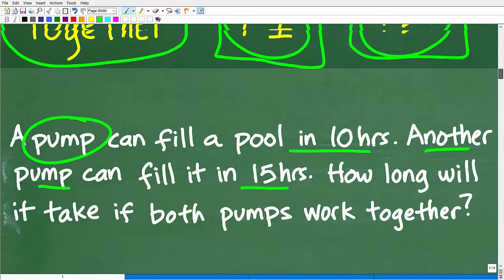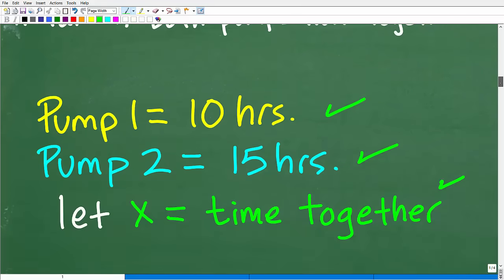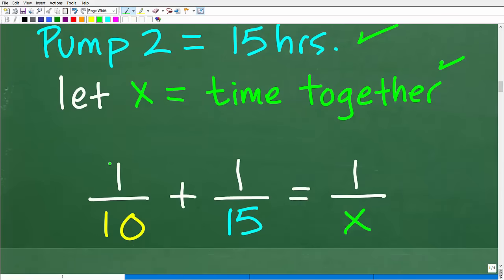In this equation here, this is going to be the time together. So one over, this is the time for that first pump. One over, this is the time for that second pump. One over the X is going to be the time working together. So let's go ahead and put this all together. So we have one over 10. This represents the part of the job that that first pump, the faster pump is going to do, plus one over 15. This is the slower pump. And that's going to equal this pump and this pump working together. It's going to equal one over X. And X represents the total time together.